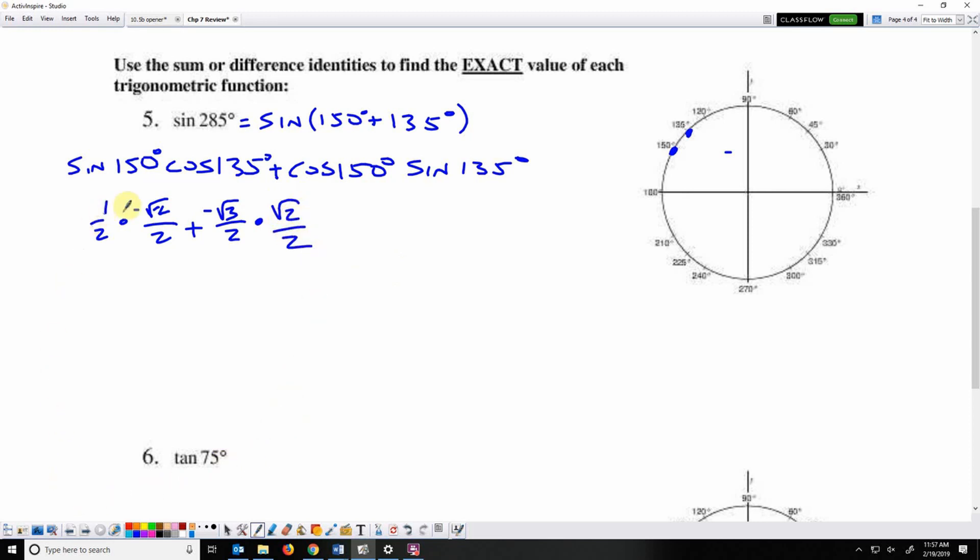So now we simplify. 1 times negative root 2, 2 times 2, there's my first fraction. And my second term, negative root 3 times root 2 is negative root 6, 2 times 2 is 4. I have a common denominator. I can combine this to make negative root 2 minus root 6 over 4.